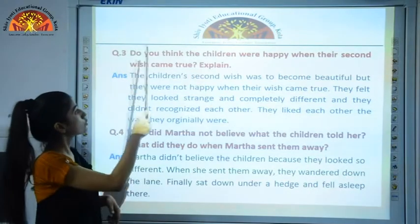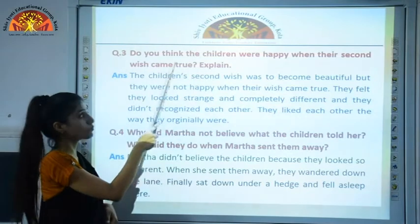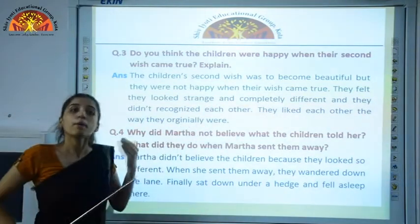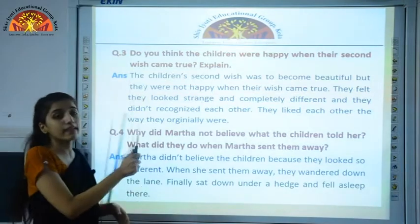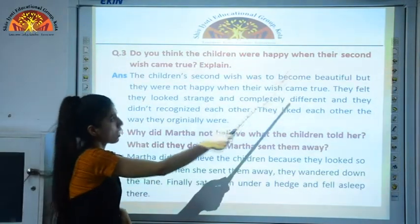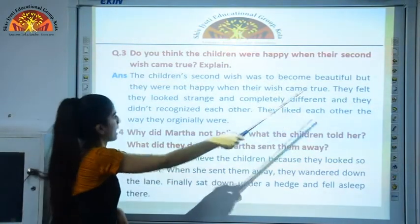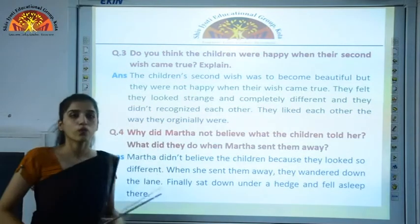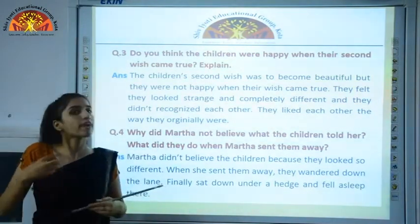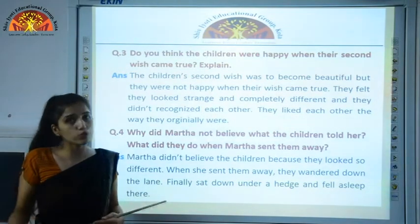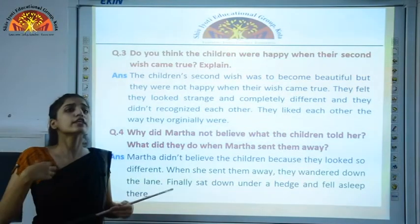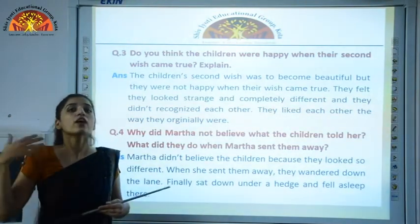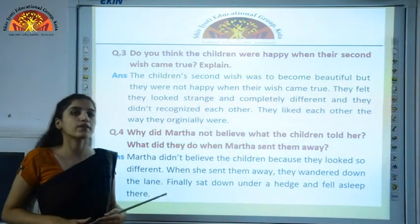Question number three: Do you think the children were happy when their second wish came true? The children's second wish was to become beautiful. They were not happy when their wish came true — they felt they looked strange and completely different and didn't recognize each other. They liked each other the way they originally were, their original appearance.